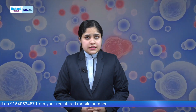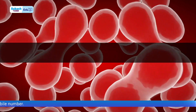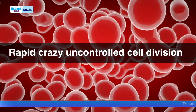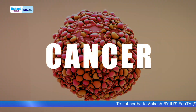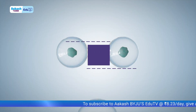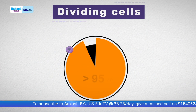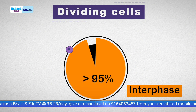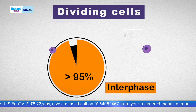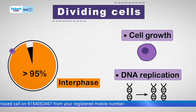But are these cells always in a dividing state? If not, what's the reason? The reason is that rapid, crazy, uncontrolled cell division leads to cancer. Actually, any cell which has to divide spends more than 95% of its cell cycle in interphase, where cell growth and DNA replication occur in an orderly manner.